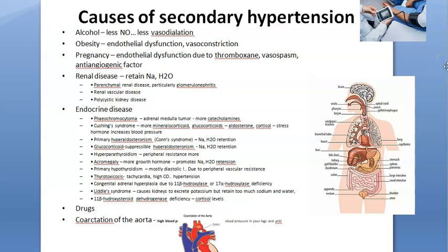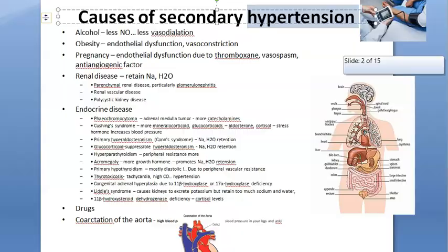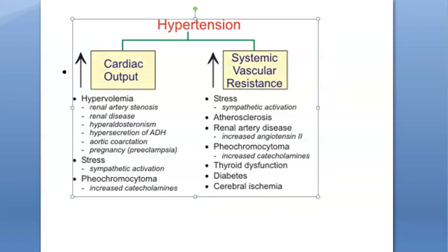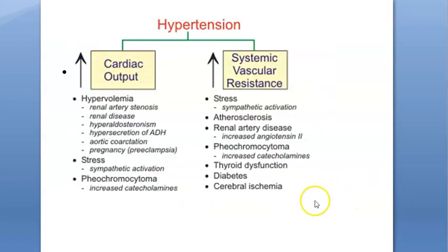In this video we want to look at the causes of secondary hypertension. Hypertension means the blood pressure is more — greater than 140 systolic and 90 diastolic. Greater than 140 by 90 is hypertension. So what is the cause for hypertension? Why will the blood pressure be more?